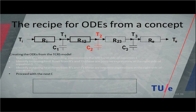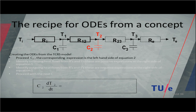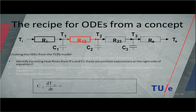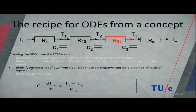We proceed with the next equation. Again, we have a capacity. Look at the table, and you see: C2 times dT2 over dt equals. Then look at the incoming heat flows to this node, giving one term, and also look at the outgoing heat flow, giving another term. This is the second equation.